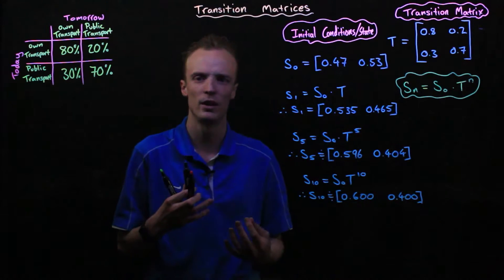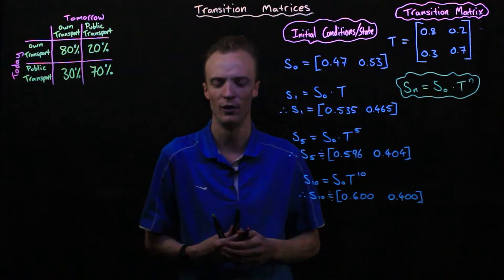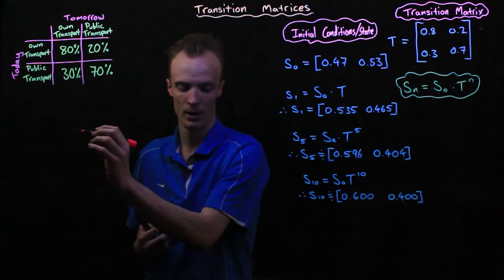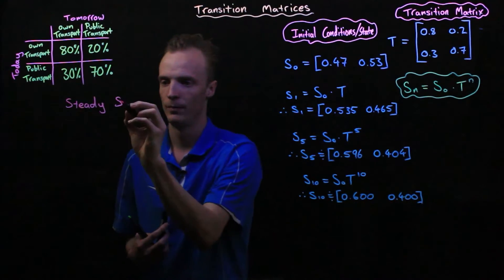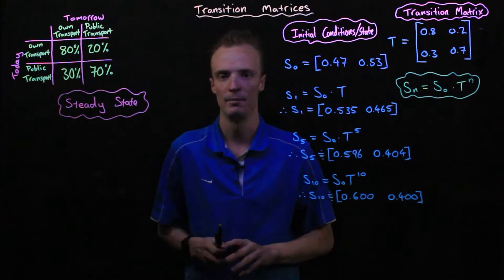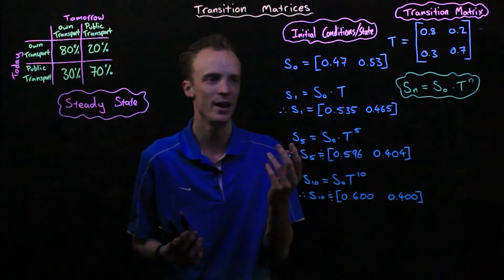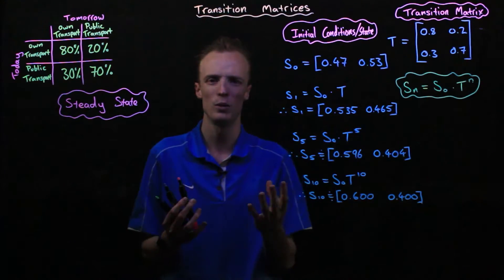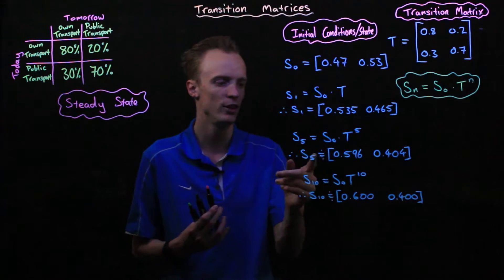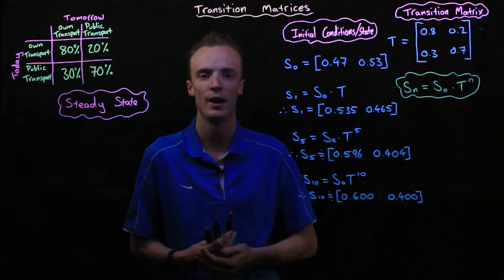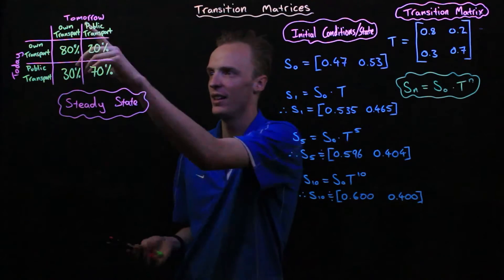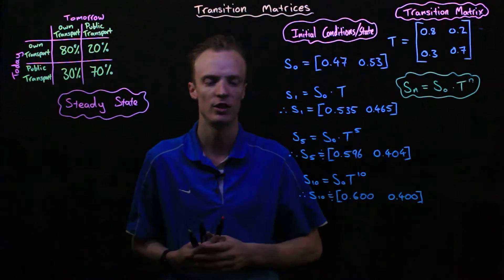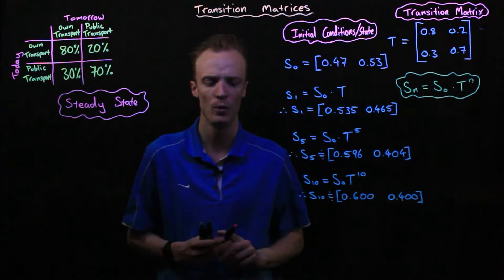Whenever we make predictions based on an initial set of conditions, we end up reaching a stable point referred to as the steady state. The steady state is when the values in our state matrix are no longer meaningfully changing from day to day. Assuming the transition probabilities don't change, there will always be a steady state — and there are two ways to find it.